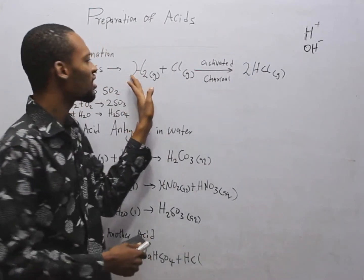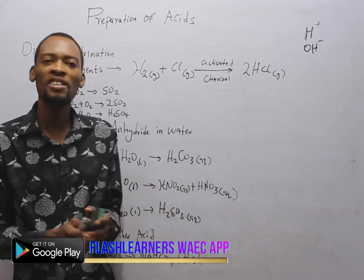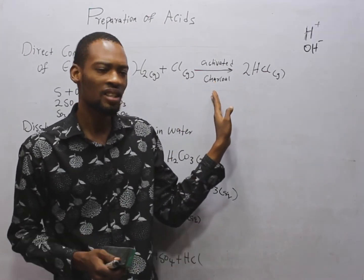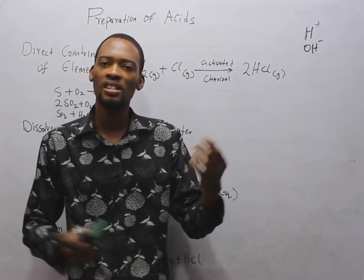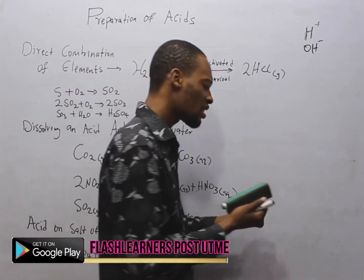If hydrogen gas reacts with chlorine gas in the presence of activated charcoal, which is a catalyst, hydrogen chloride is formed or hydrochloric acid is formed, HCl. So an acid has been formed.